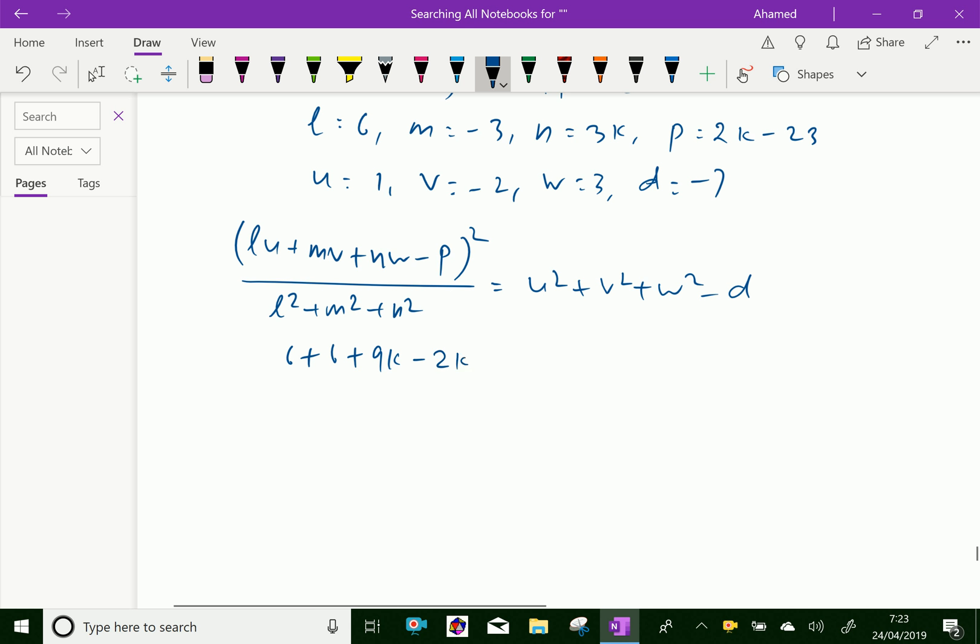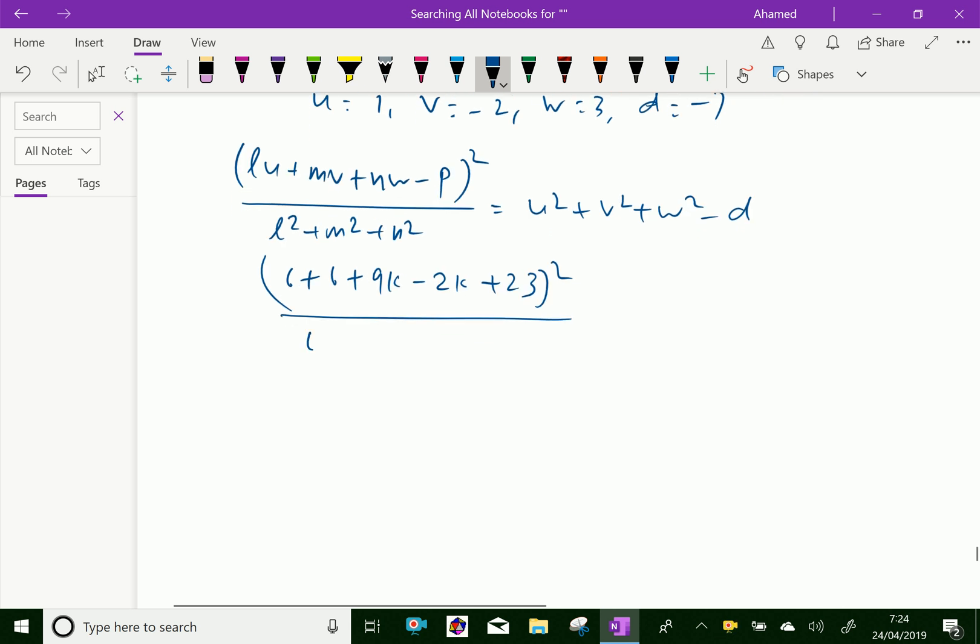minus 2k plus 23 whole square over 6² + (-3)² + (3k)² which is equal to 1² + (-2)² + 3² + 7.